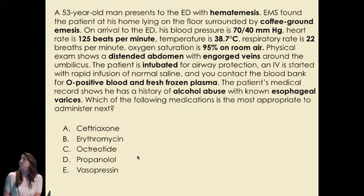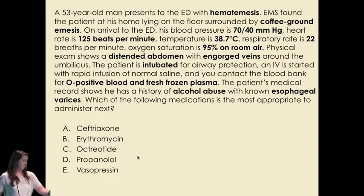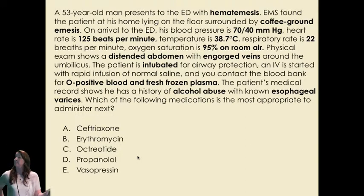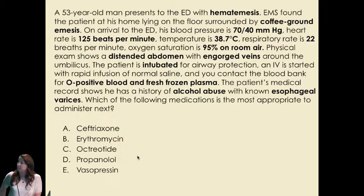A 53-year-old man presents to the ED with hematemesis, followed by coffee-ground emesis. On arrival his BP is 70/40, heart rate 125, temperature 38.7, respiratory rate 22, and O2 saturation 95% on room air. Physical exam shows a distended abdomen with engorged veins around the umbilicus. The patient is intubated for airway protection, IVs started with rapid infusion of normal saline, and blood bank contacted for O-positive blood and fresh frozen plasma. The patient has a history of alcohol abuse and known esophageal varices. Which medication is most appropriate next?